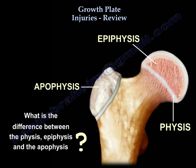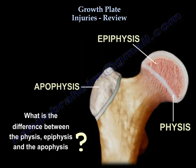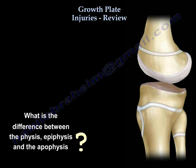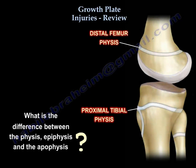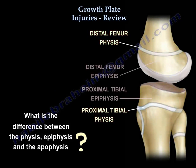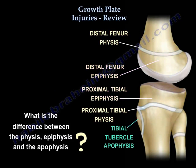You need to know the difference between physis, epiphysis, and apophysis. The physis is the growth plate. The epiphysis is usually near the joint. The apophysis is usually attached to a tendon or a ligament. Physial fractures heal in roughly half the time required by an equivalently sized bone.